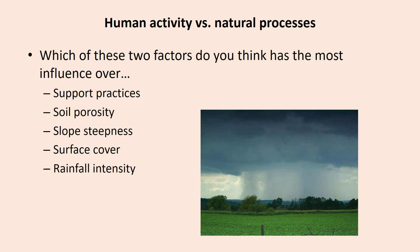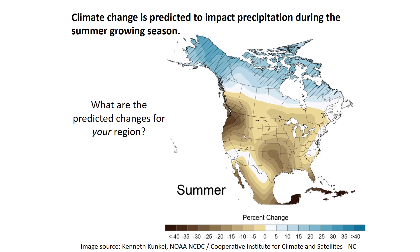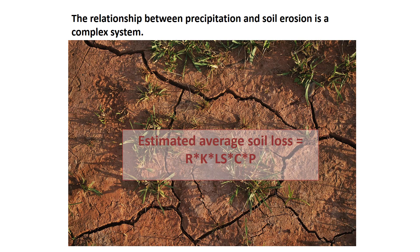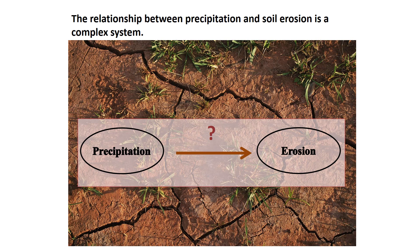So what controls rainfall? Climate change influences natural processes such as rainfall and heightens the need for human action. The map shows projected changes during summer, the primary growing season, in precipitation relative to the recent past as simulated by 15 climate models. The simulations are for late this century, showing changes expected by 2080 to 2099. Confidence in the projected changes is highest in the hatched areas. What are the predicted changes for your region? Earth is a system composed of the atmosphere, hydrosphere, biosphere, and geosphere, and there must be interaction between the different spheres.